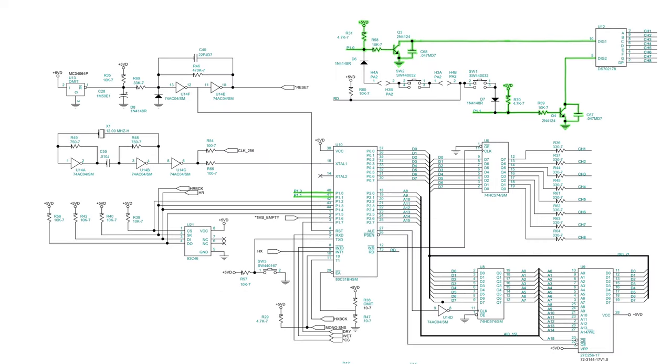The microcontroller can choose which digit to light up by using its P1.0 and P1.1 signals to pull all of one digit's cathodes to ground. By rapidly alternating which digit is lit up, the microcontroller can control both digits with only 10 signals instead of 16. The microcontroller does this fast enough that I can't see it happening.